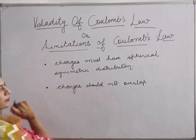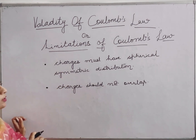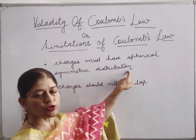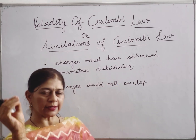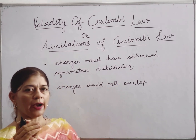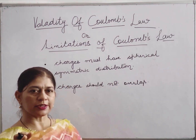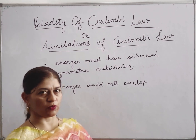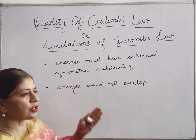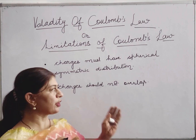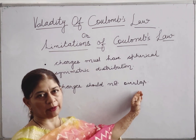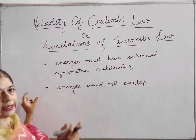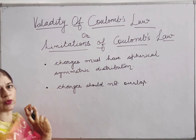What is the meaning of spherical symmetric distribution? It means there is some center around which the charges are equally distributed in a symmetric way. Charges should not be on top of one another — there should not be any overlapping. These are the conditions, and only then Coulomb's law is valid.